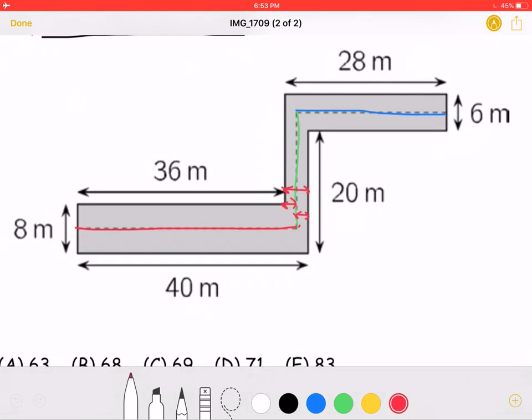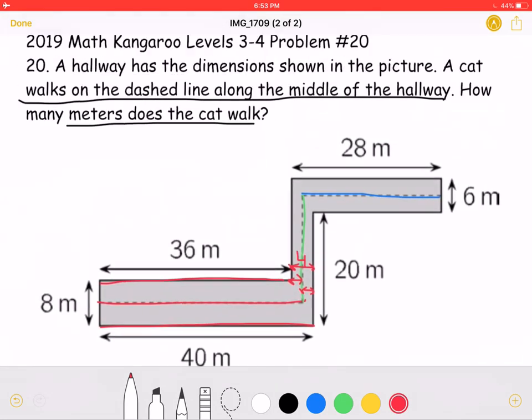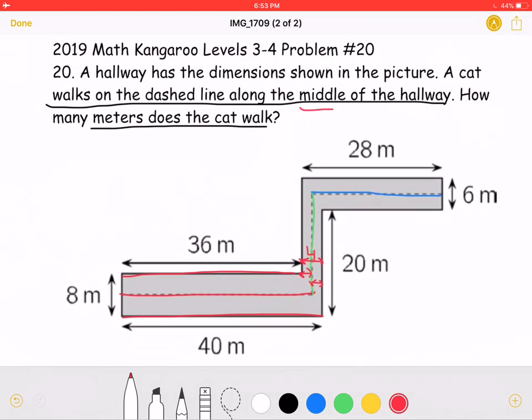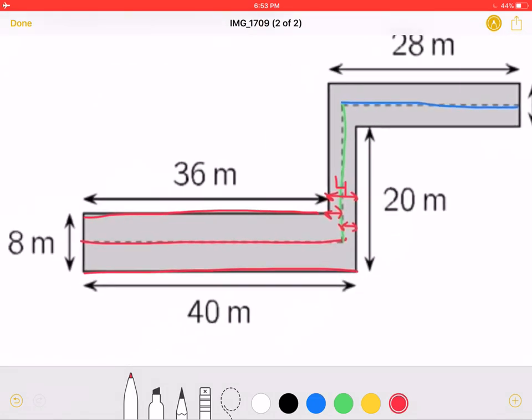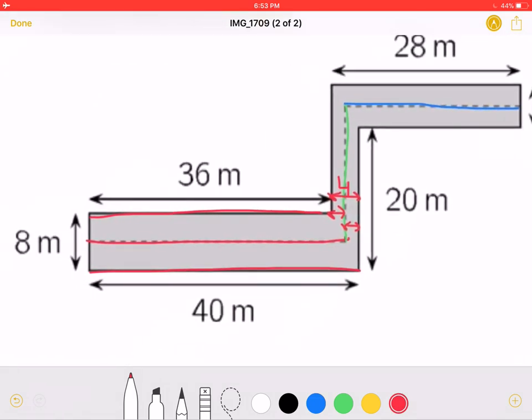To start, we know the length of this line is 40 meters, and the length of this line is 36. So by subtracting 36 from 40, we will get the length of this little piece here as being 4 meters. As the problem states, the cat's walking in the middle of the hallway. So each part must be equal to 2 meters if the entire thing is a width of 4.